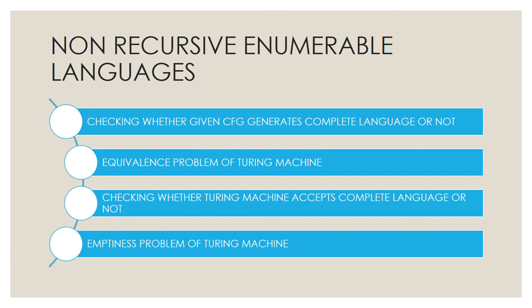Checking whether a given CFG generates a complete language or not — the totality problem of CFG — is a non-RE language. The equivalence problem of Turing machine is also non-RE. Checking whether a Turing machine accepts a complete language or not — the totality problem of Turing machine — is non-RE. Finally, the emptiness problem of Turing machine is also a non-RE language.